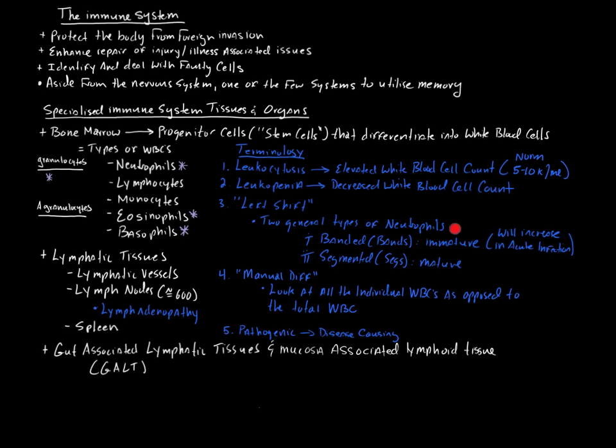You have what are called your banded neutrophils, and these are immature. These are neutrophils that have not fully differentiated yet. And then you have your segmented neutrophils, and these are your mature neutrophils. So what happens typically, in the setting of an acute bacterial infection, where you have an acute infective process occurring, your body will send, it will create and send larger numbers of these immature cells out to the front line, so to speak.